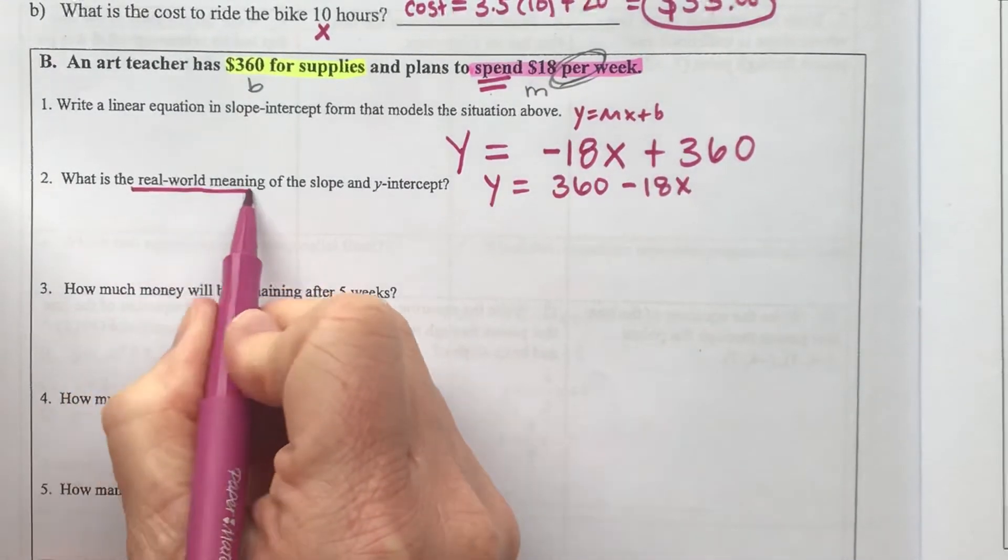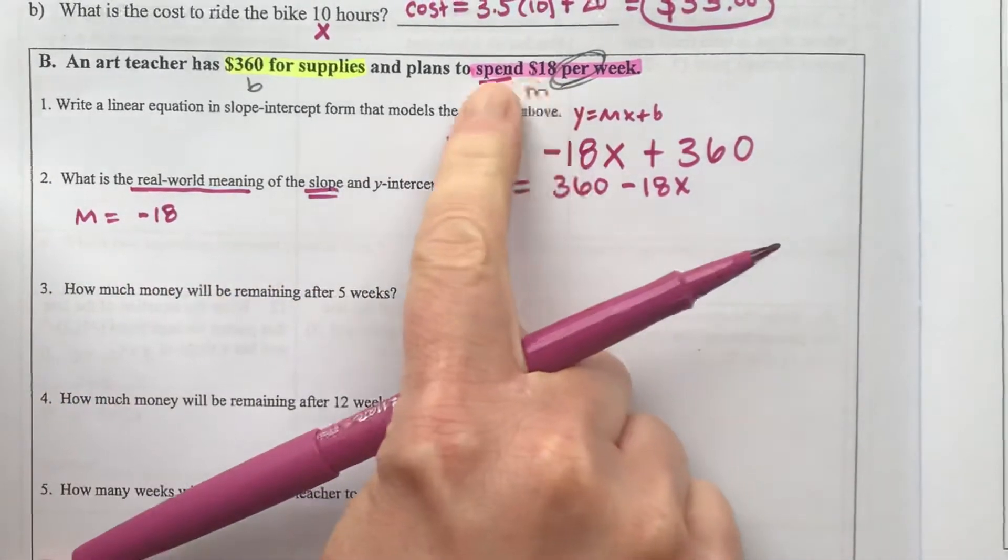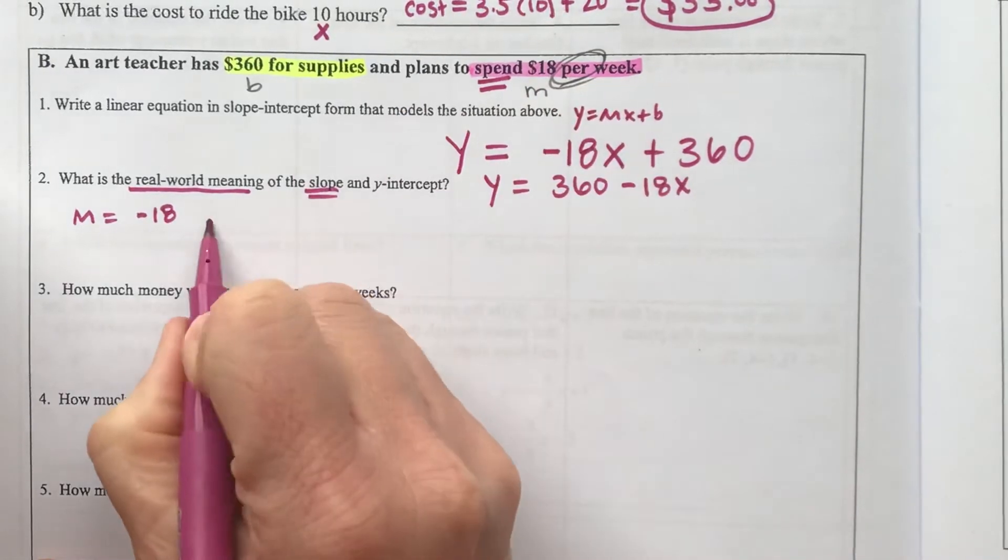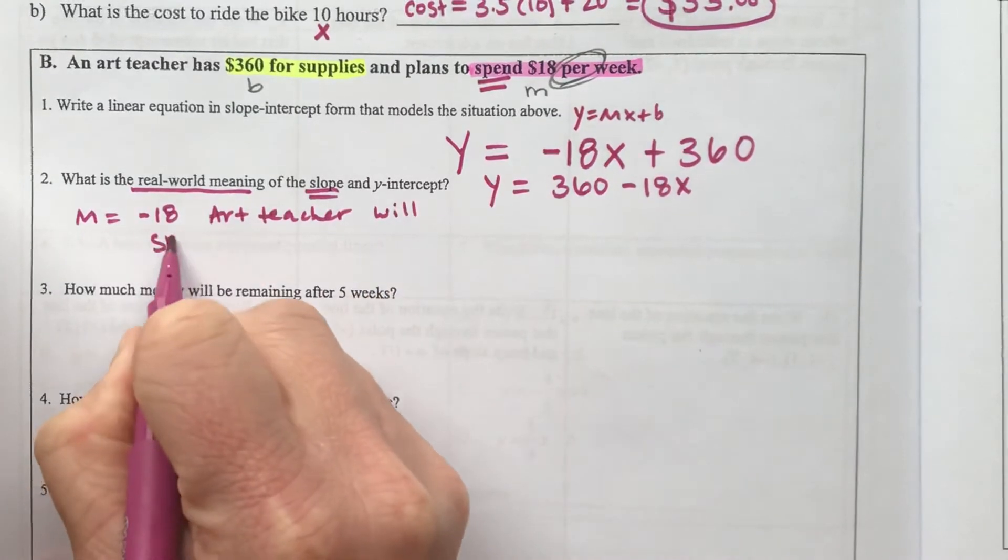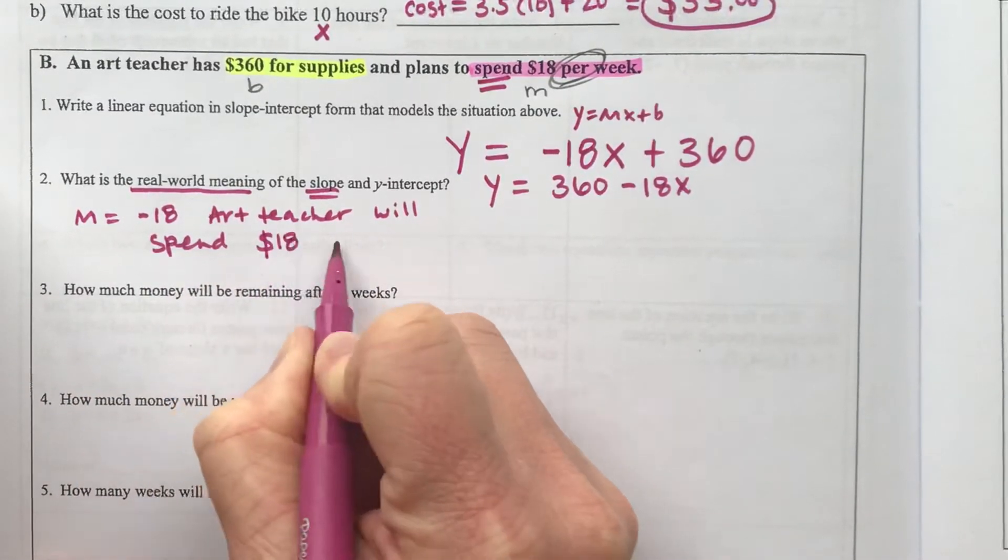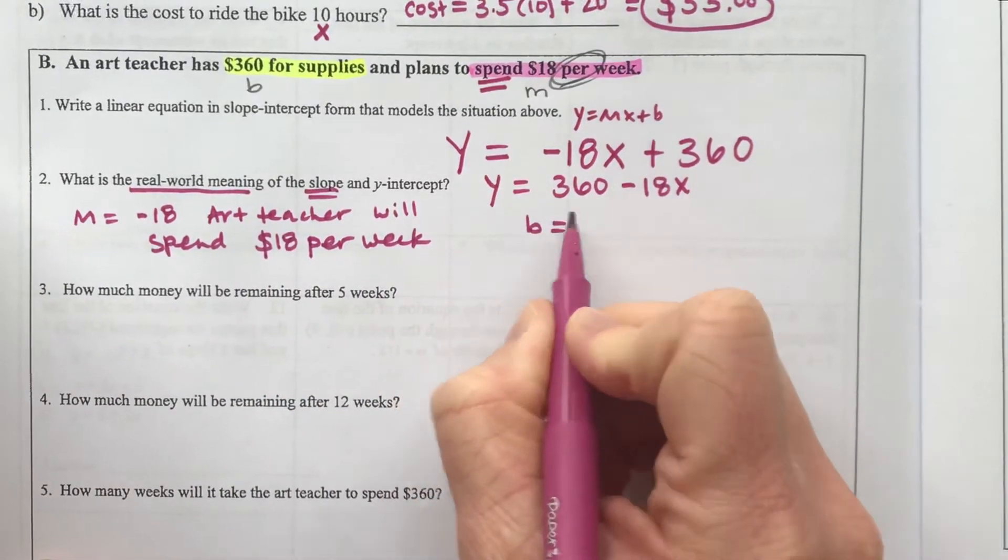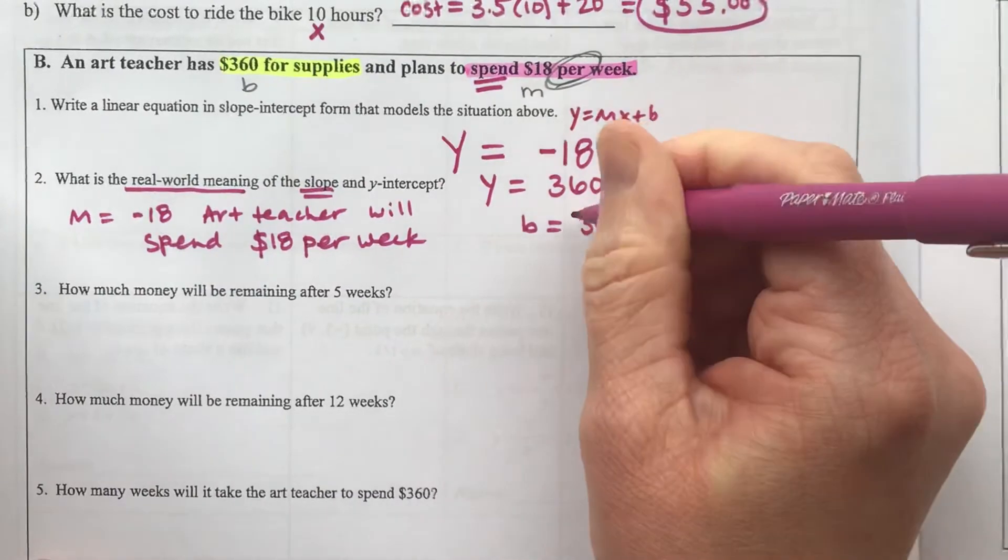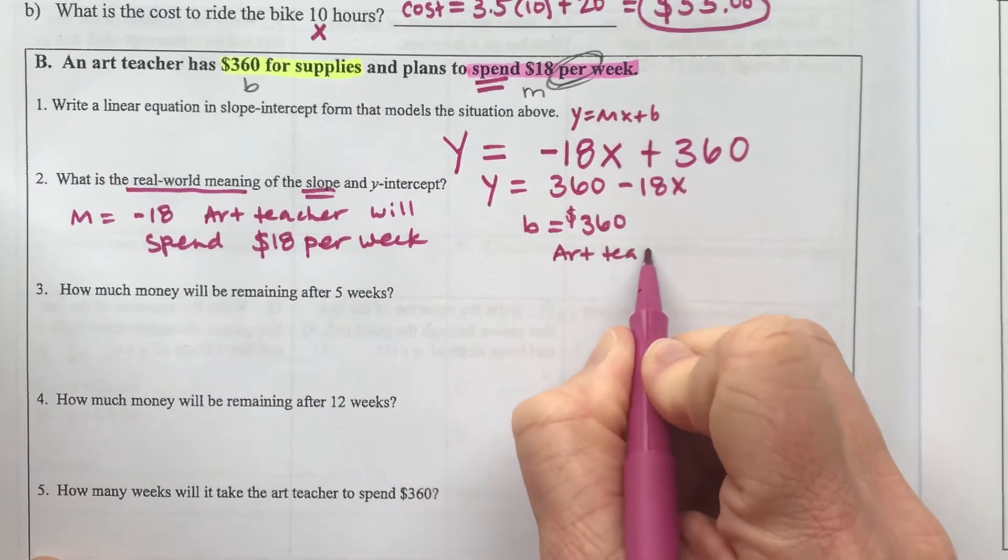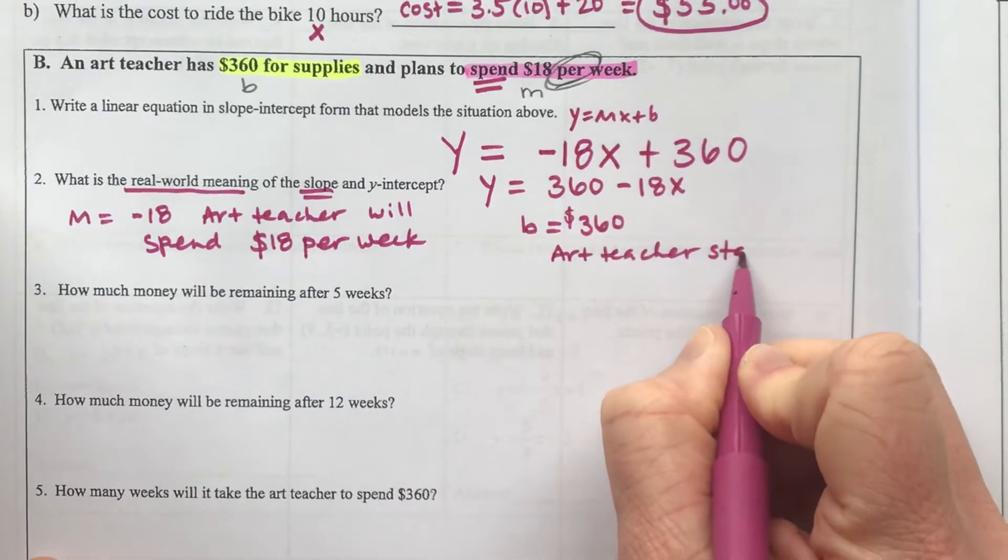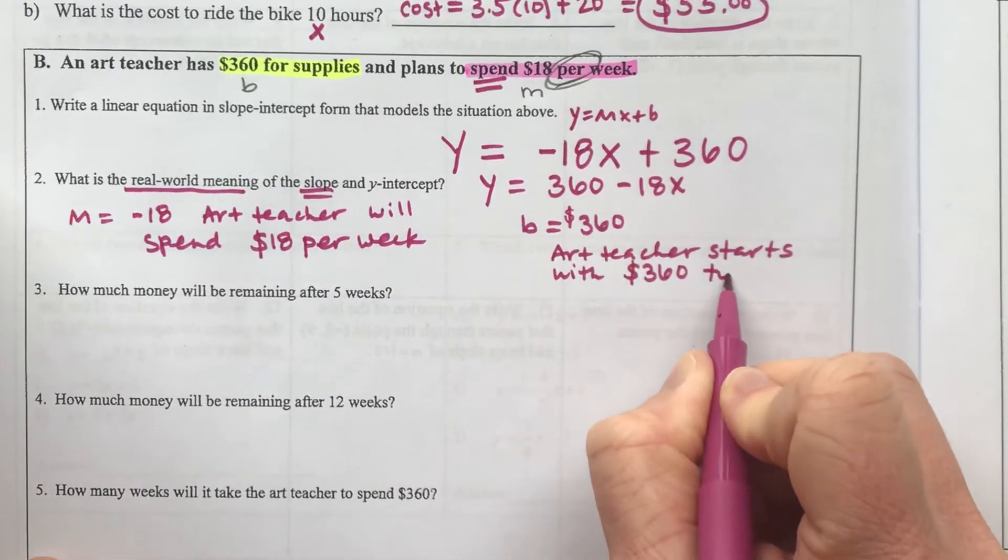Now the real-world meaning for our slope, the spending of $18, means the art teacher will spend $18 per week. Our b, which is our starting point of $360, means that the art teacher starts with $360 to spend.